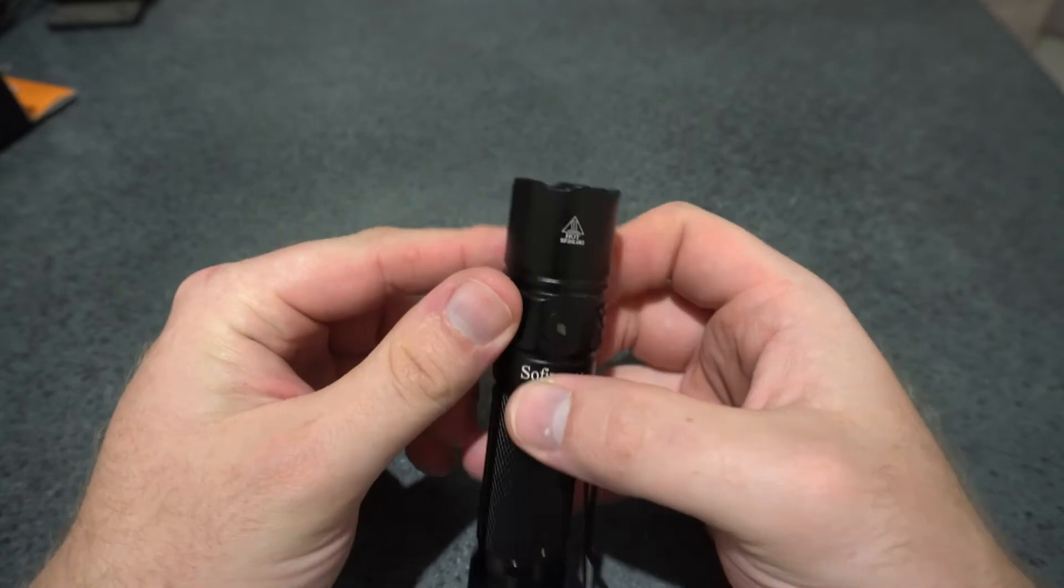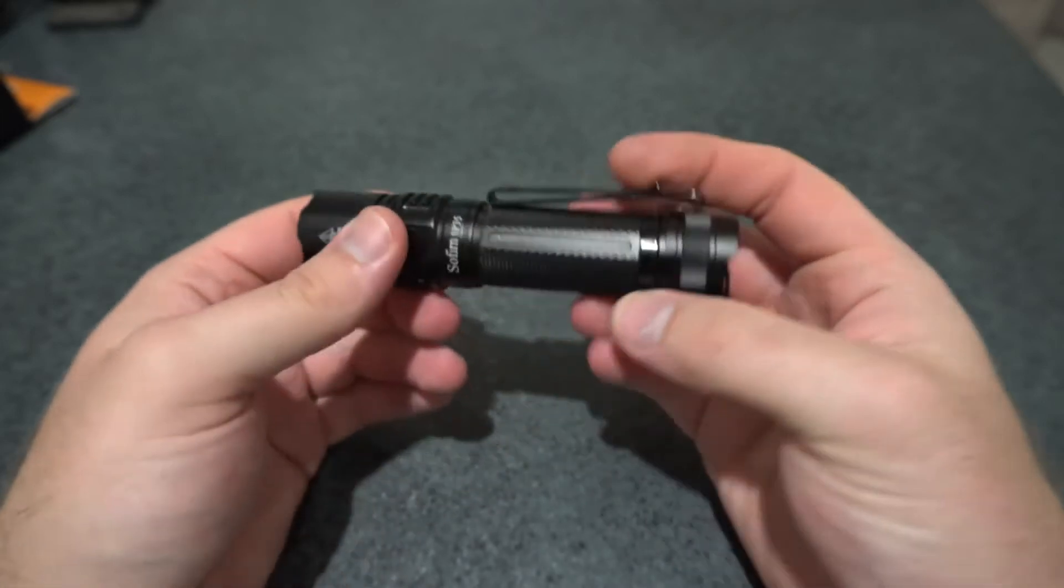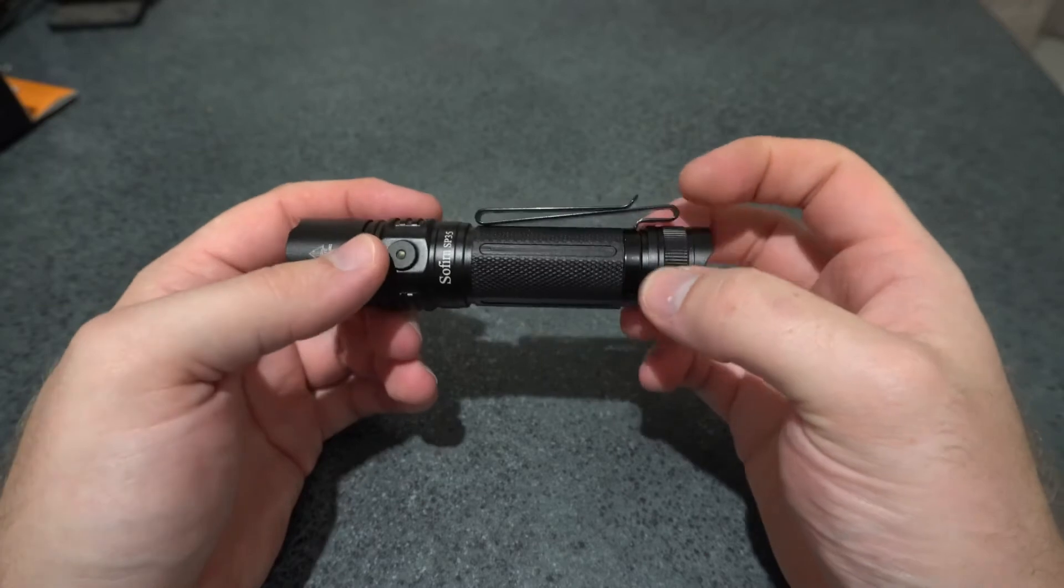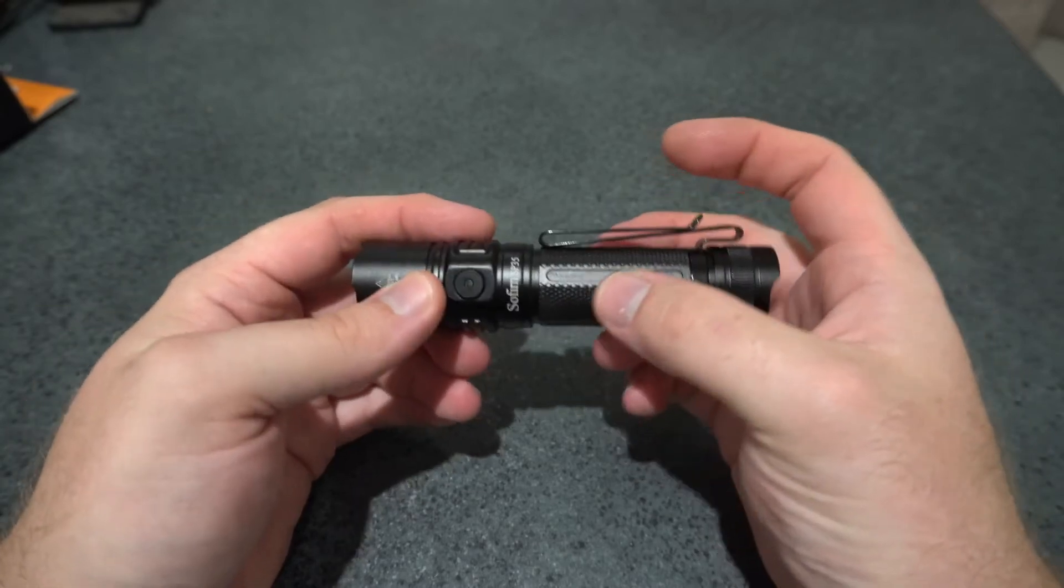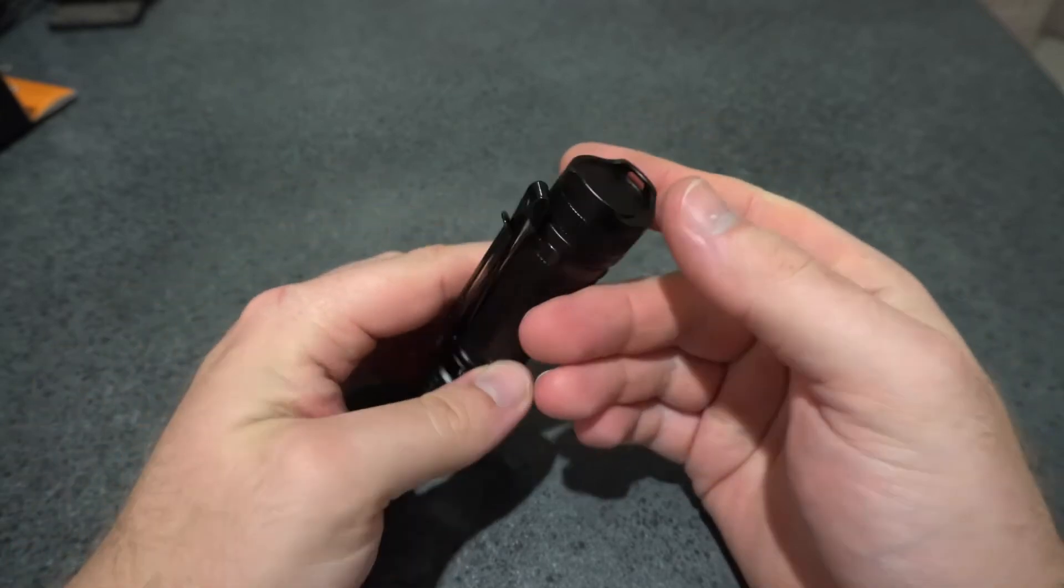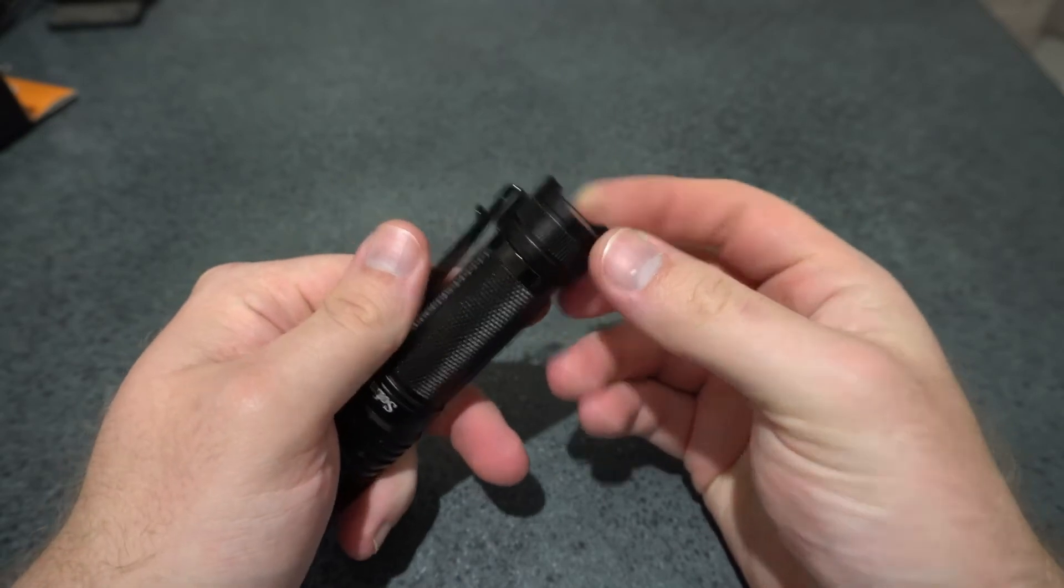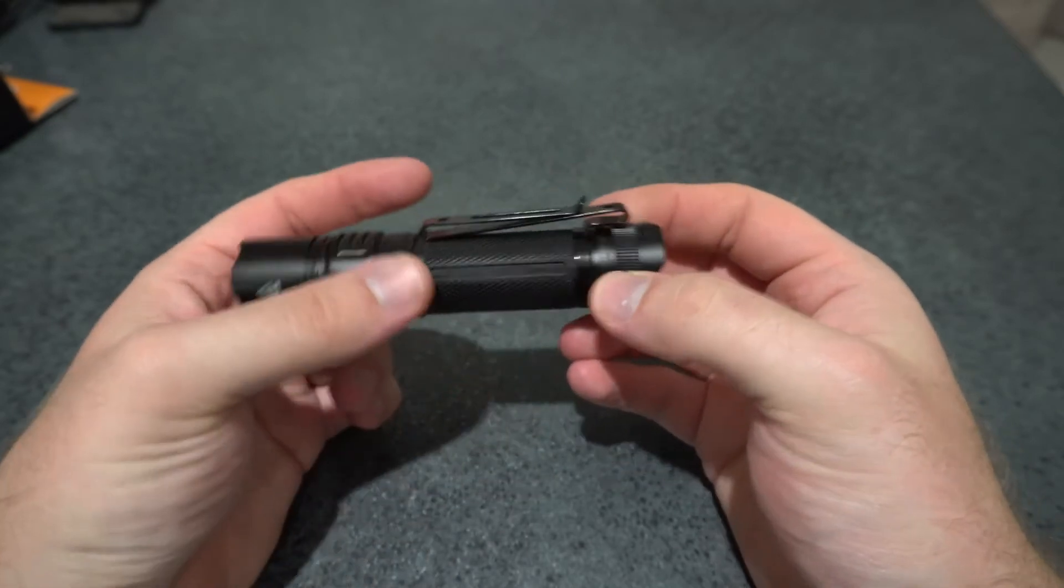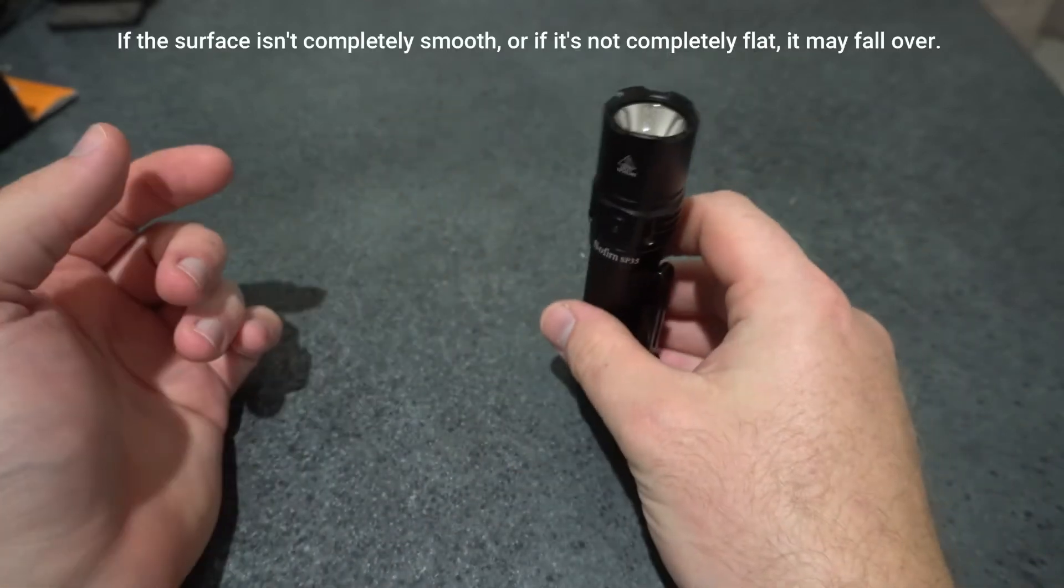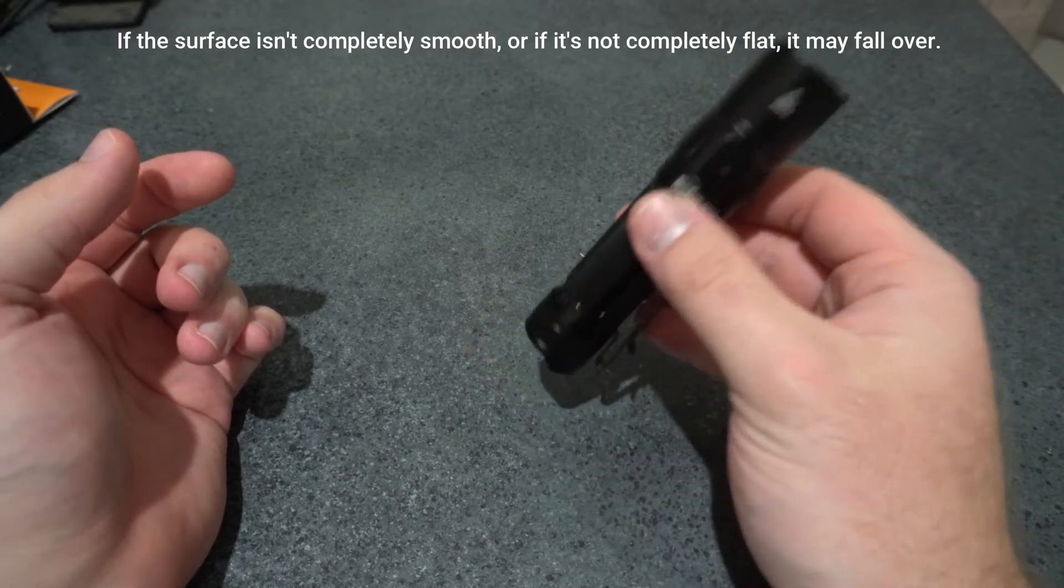We've got the attack bezel here. The tail cap is a larger diameter than the battery tube. These ridges don't allow it to tail stand quite well. I find it's just not quite stable. I mean, it's fine.